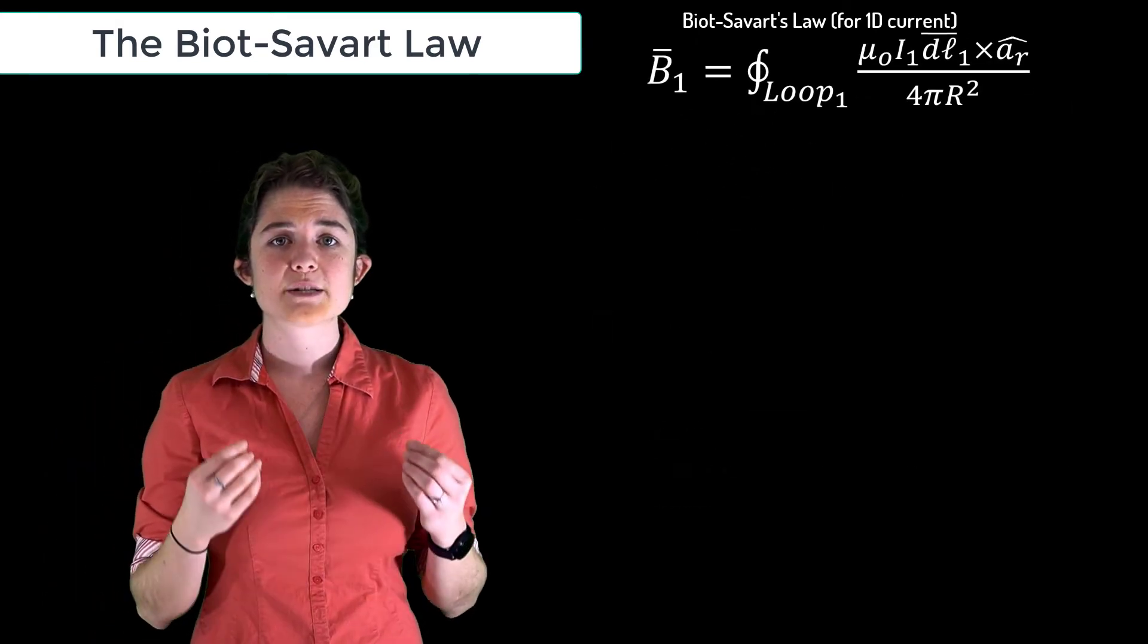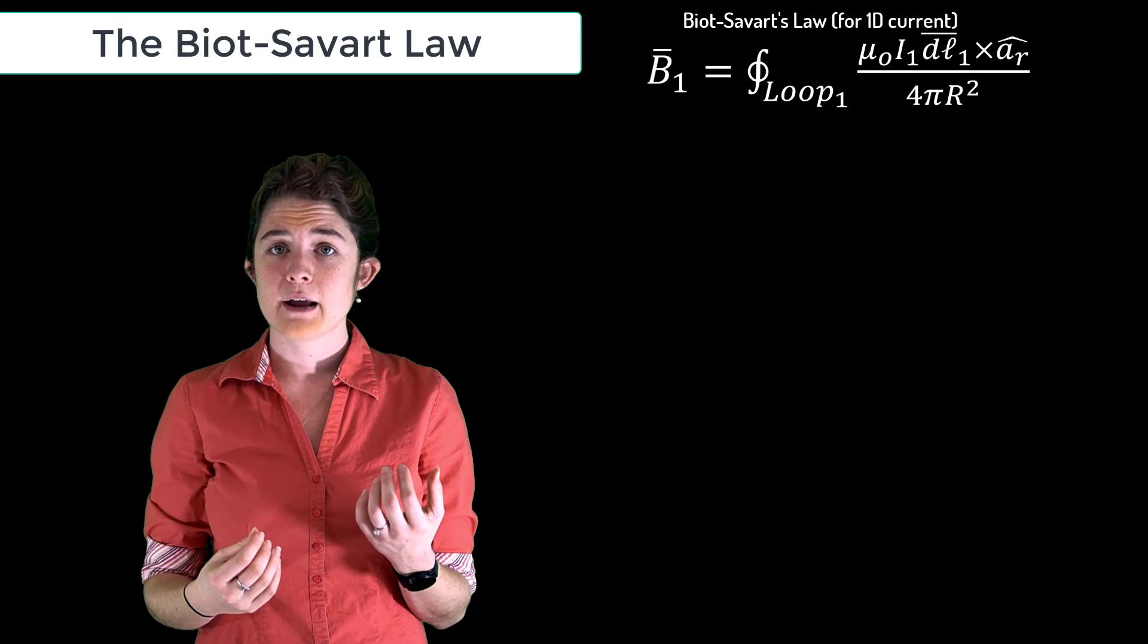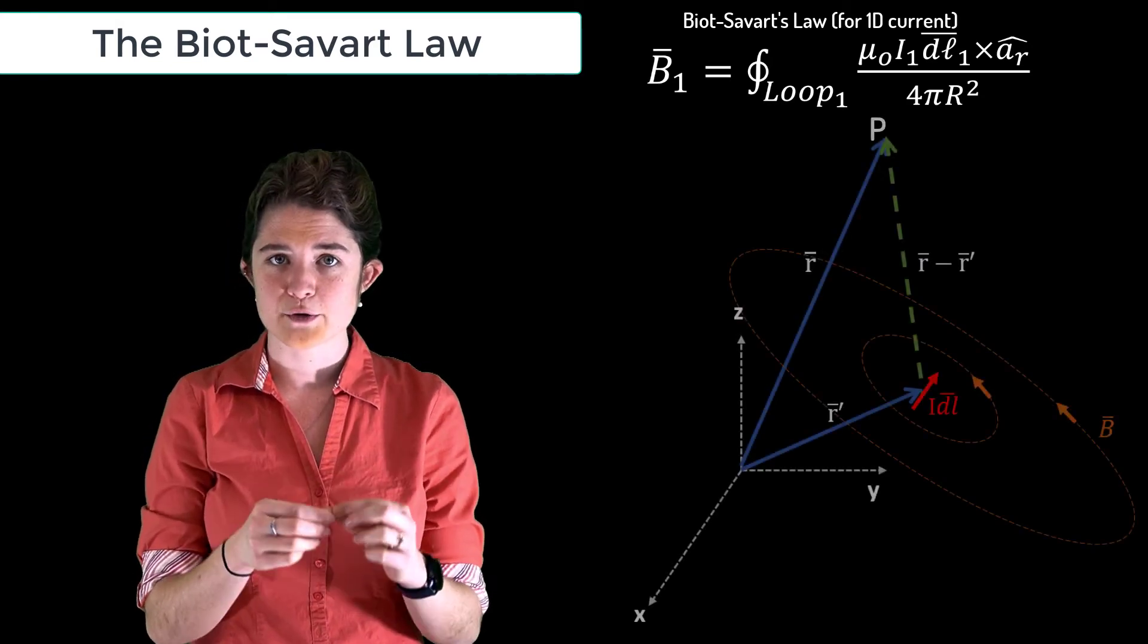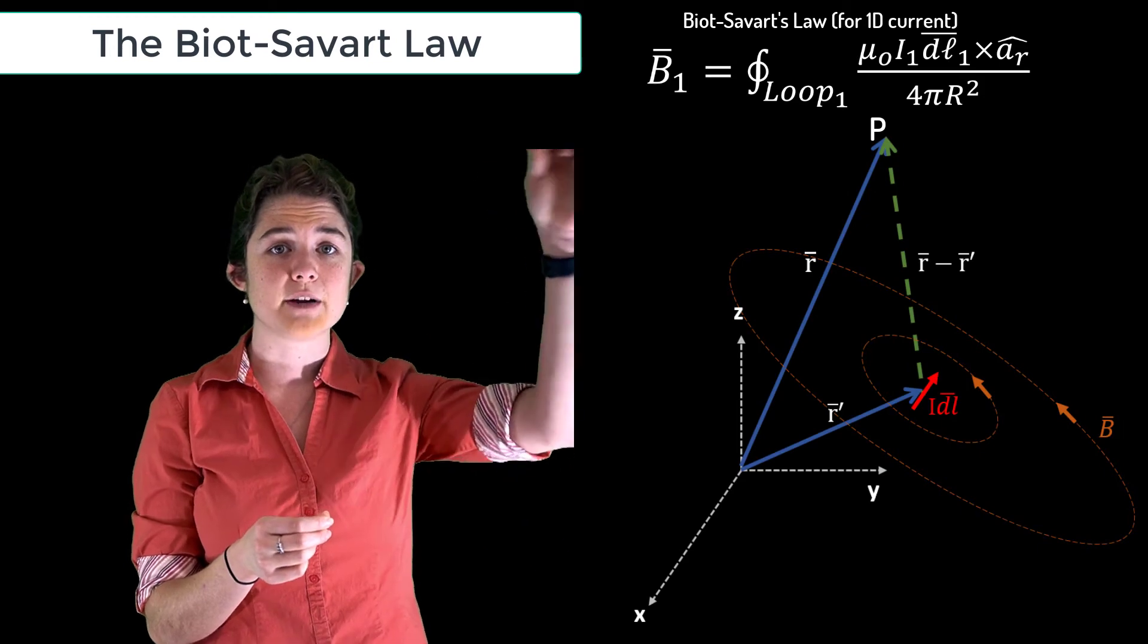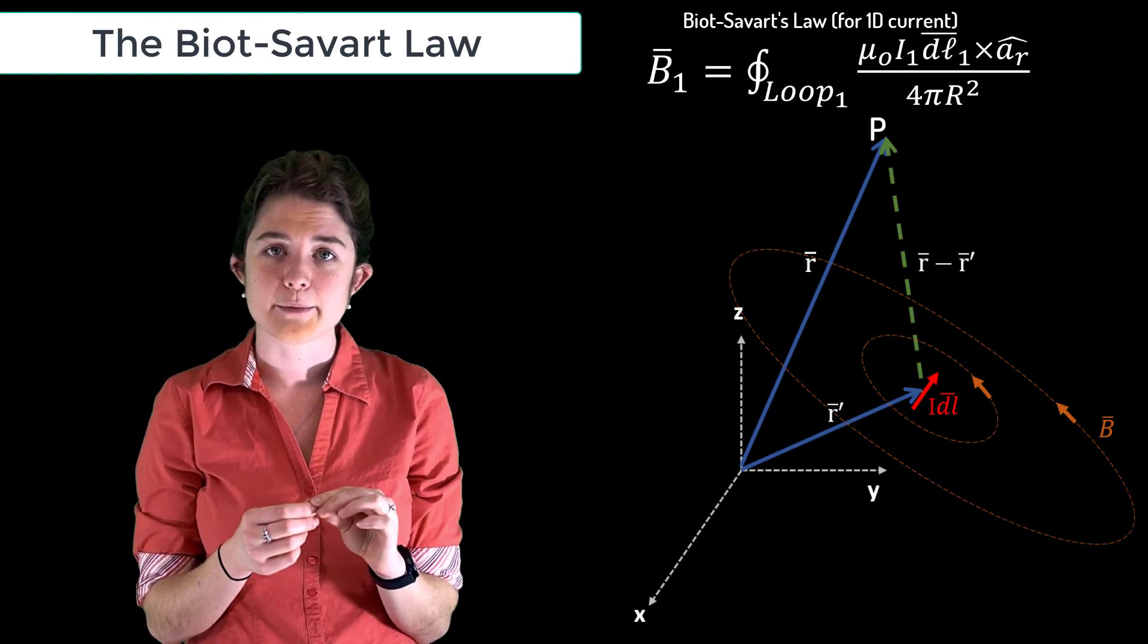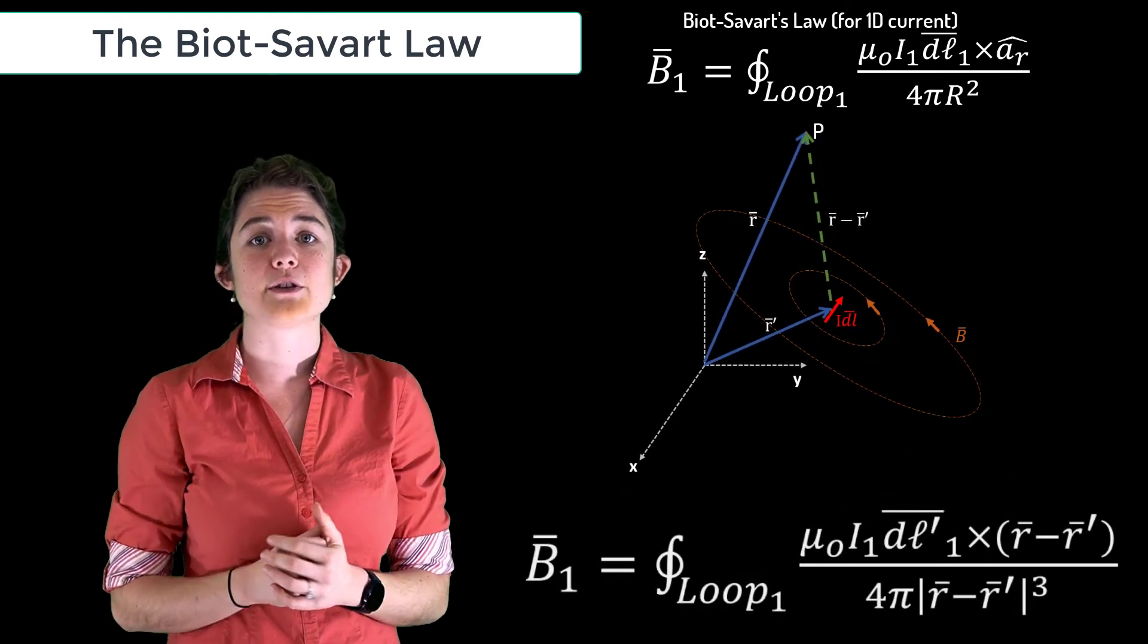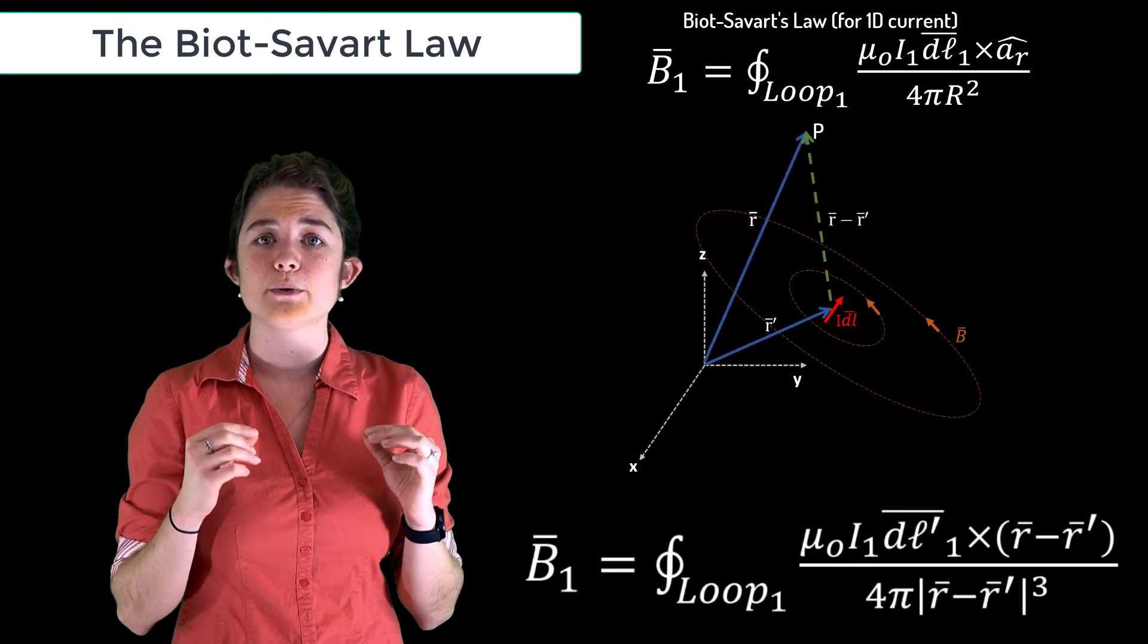As we've done before, we can express the unit vector a sub R and the distance capital R in terms of the vectors R, which points from the origin to the field observation point, and R prime, which points from the origin to the field source. This gives us this equation for the total magnetic field due to a single loop of time-invariant current.